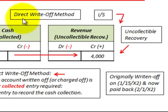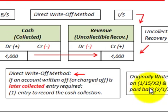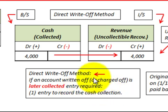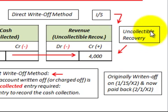Now let's look at how we'd recover this amount under the direct write-off method. It was originally written off on 1/15/X2 and paid back on 2/1/X2. Using the direct write-off method, if an account written off is later collected, only one entry is required: the entry to record the cash collection. We debit cash for $4,000 on the balance sheet, and the credit goes to a revenue account on the income statement for $4,000, identified as an uncollectable recovery.